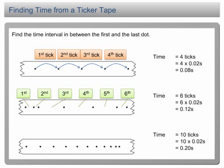This example shows how the time is determined from a ticker tape. Make sure that you understand it fully. Finding time is the most important step in measuring velocity.